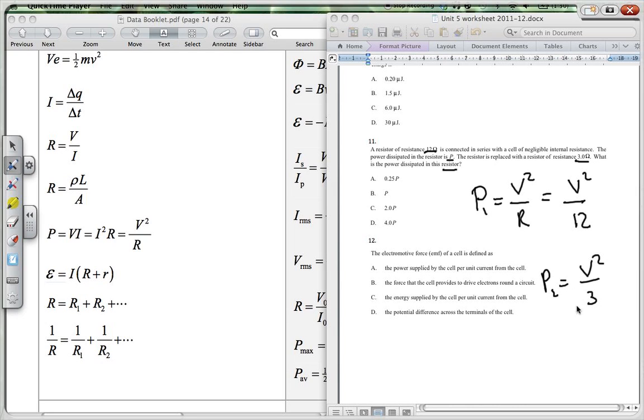Now obviously the power here with the 3 ohm resistor is going to be greater, and we could write that as 4 times V squared over 12. So it's going to be, and this over here would be P, so it's going to be 4P.